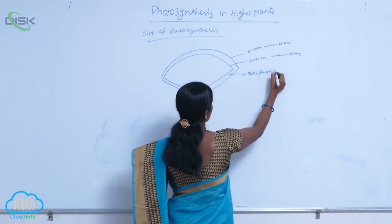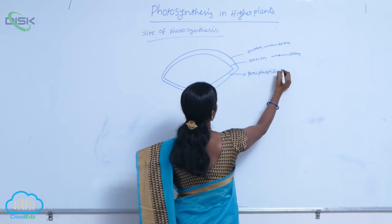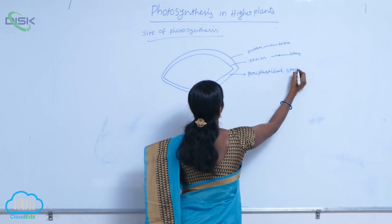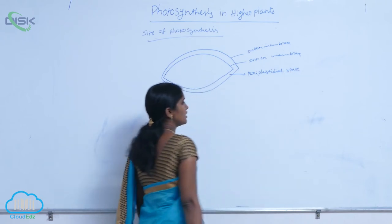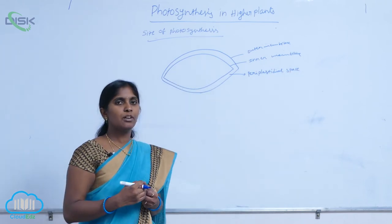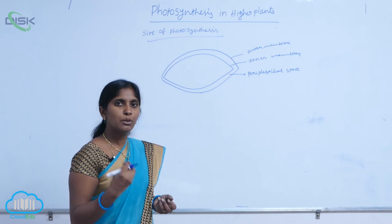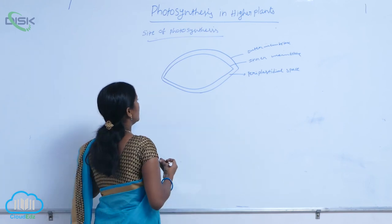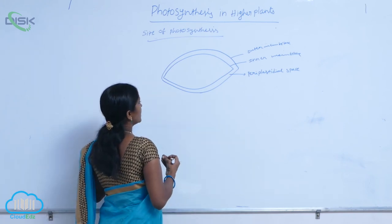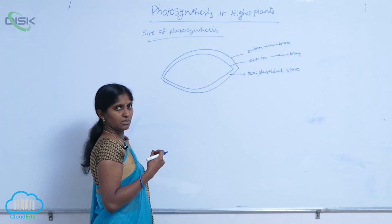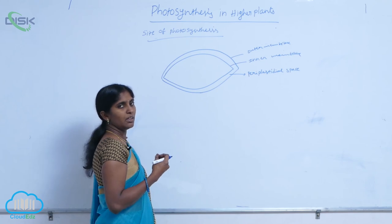Inside the chloroplast, there is stroma and thylakoid.